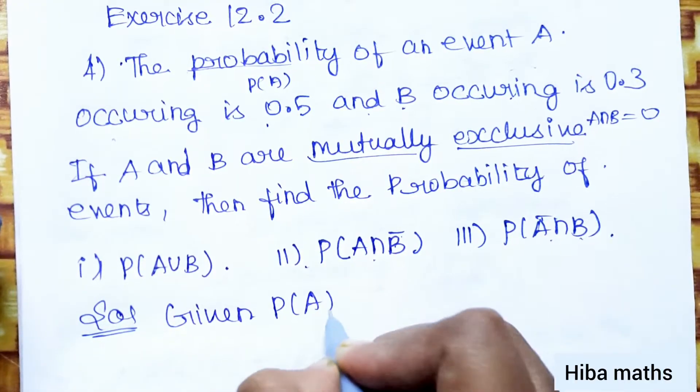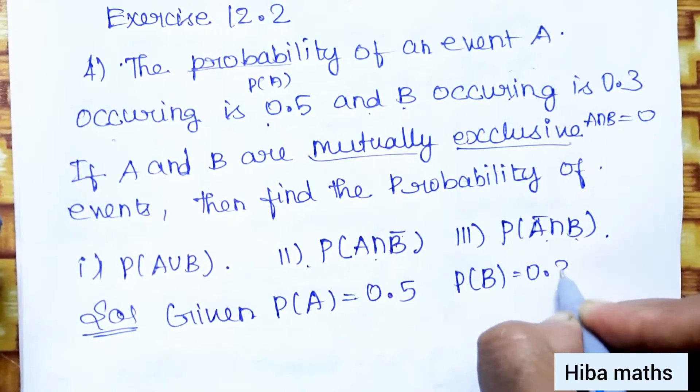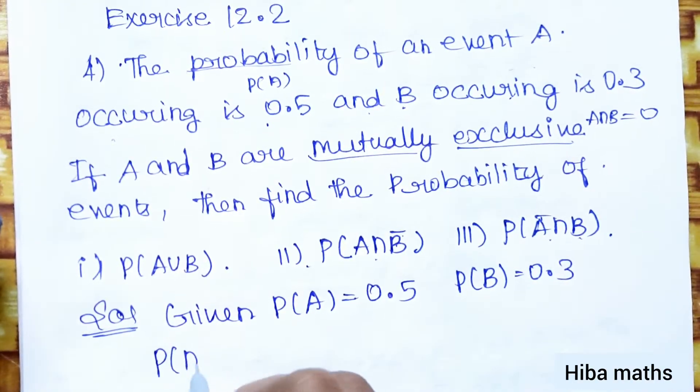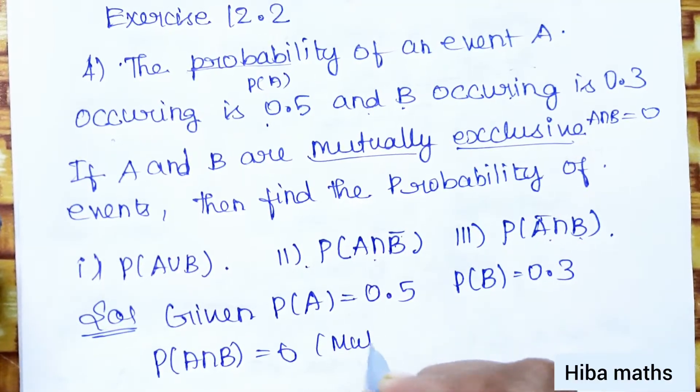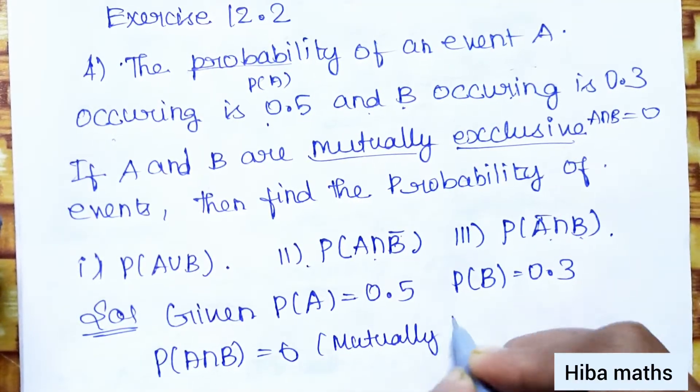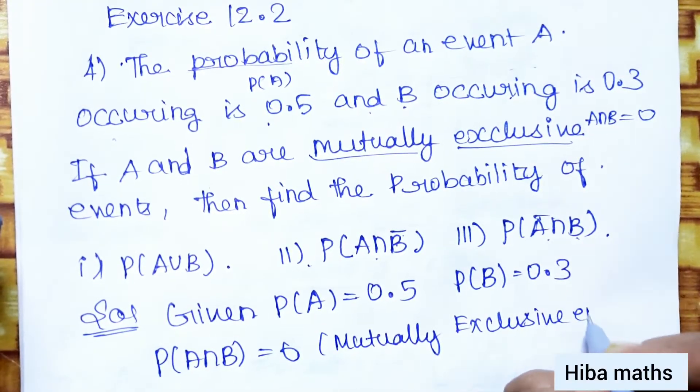Given: P(A) is 0.5, P(B) is 0.3, and P(A∩B) is 0, because we have mutually exclusive events.